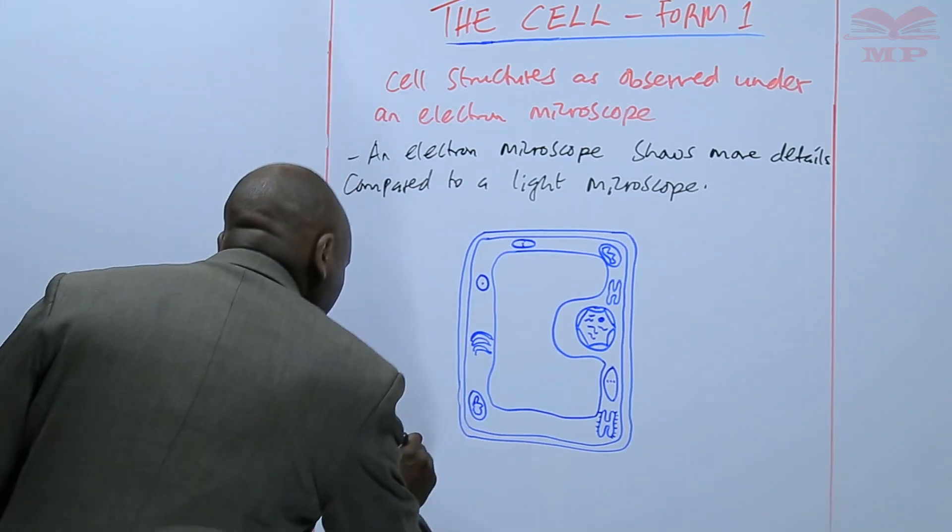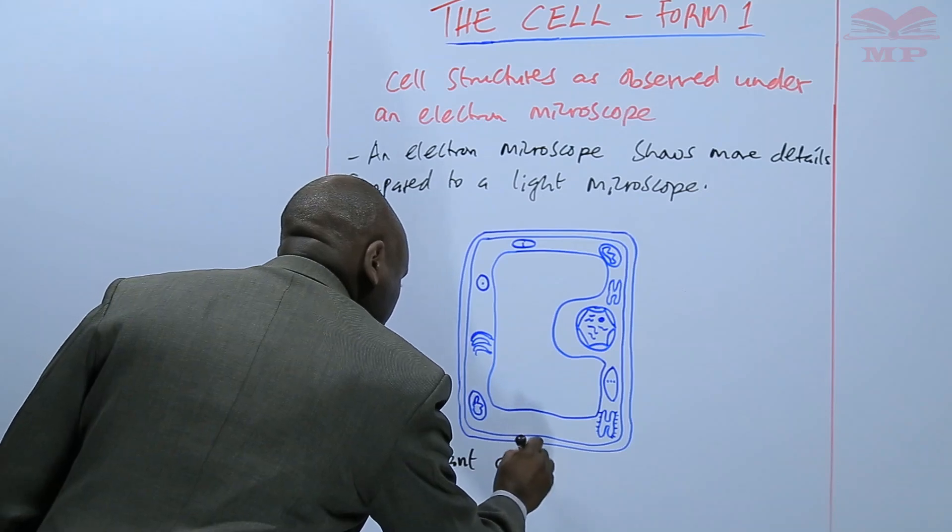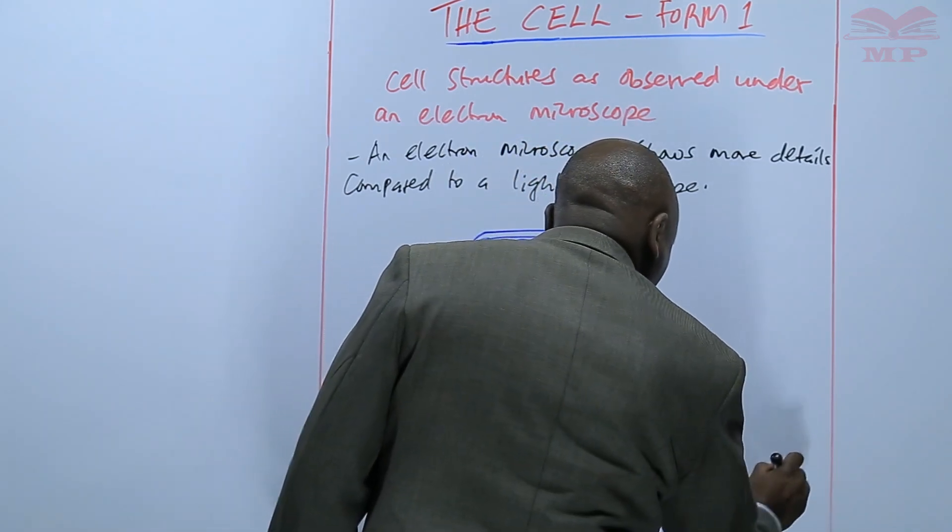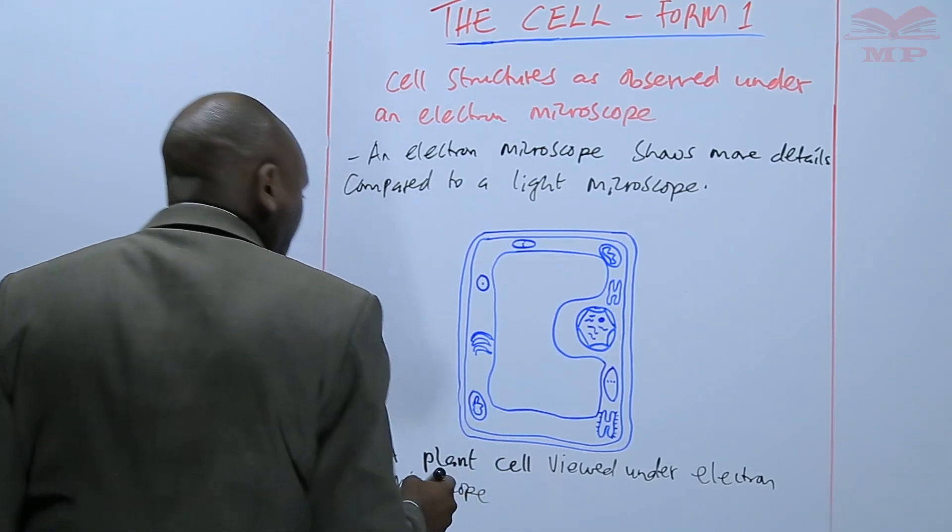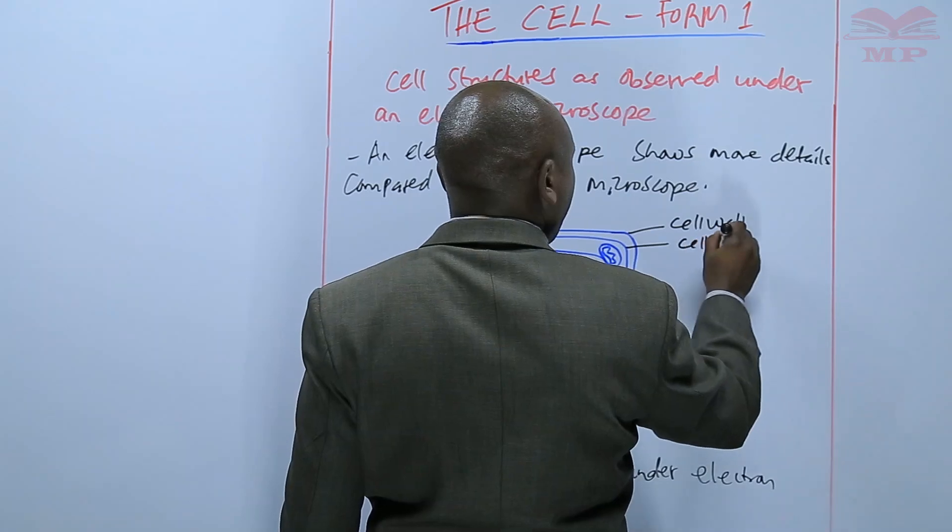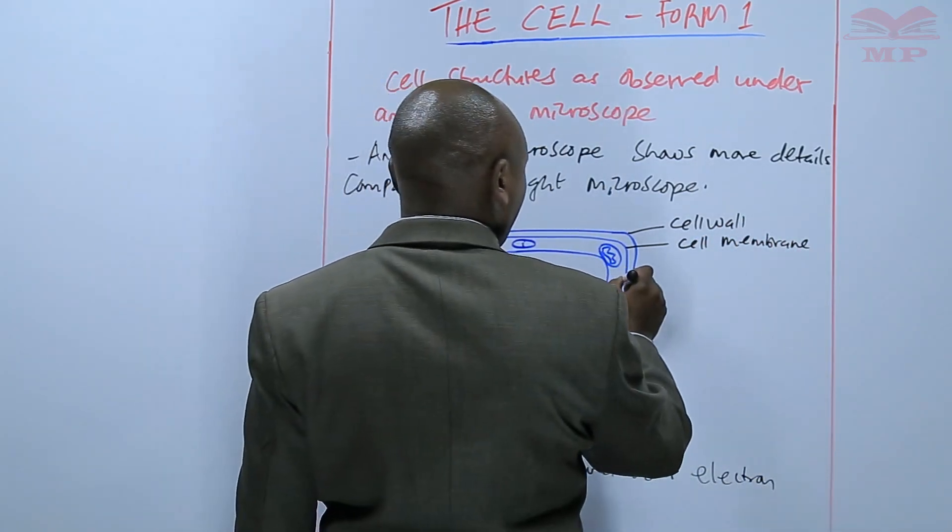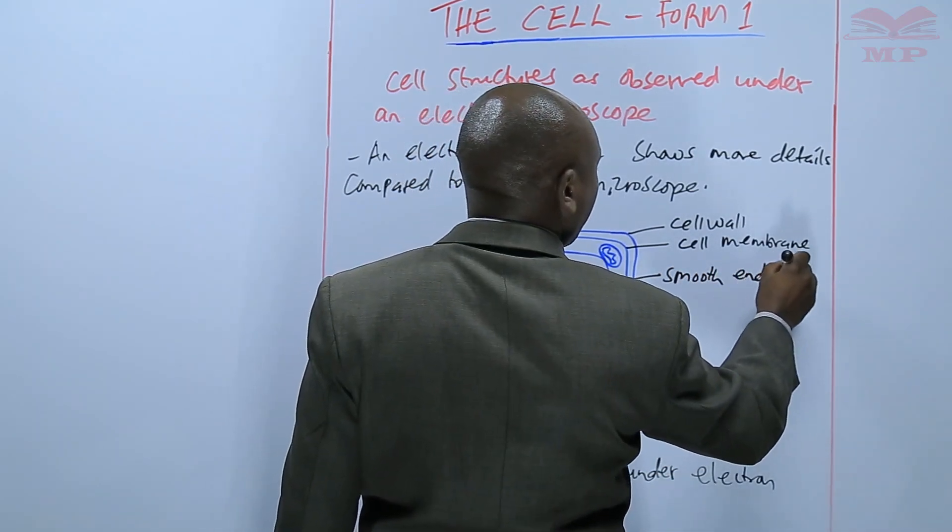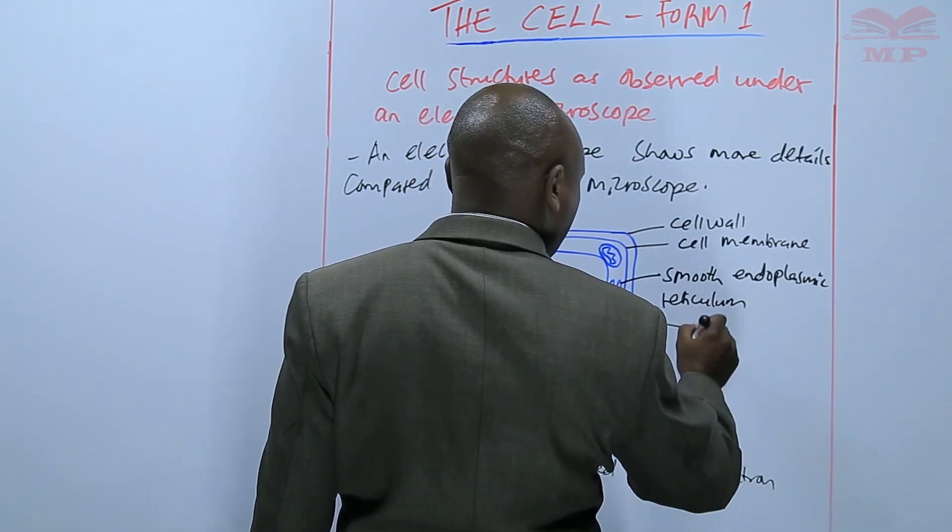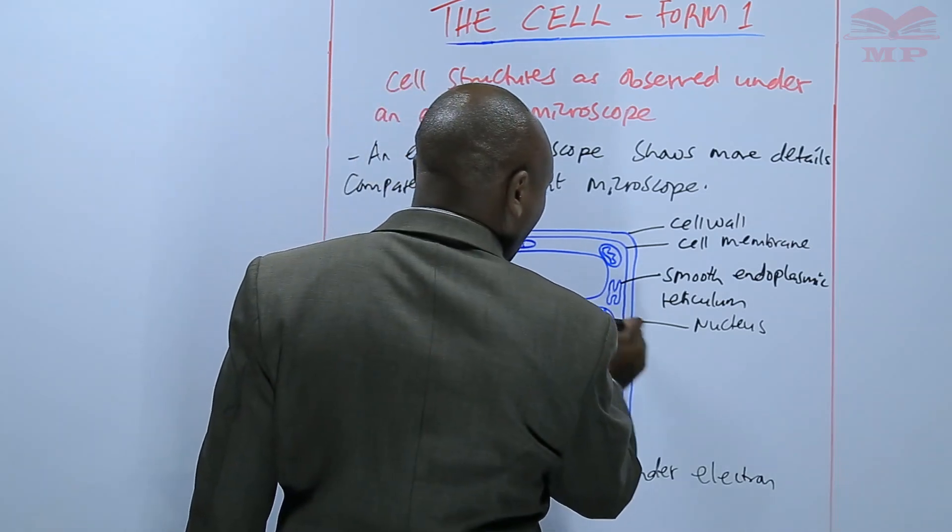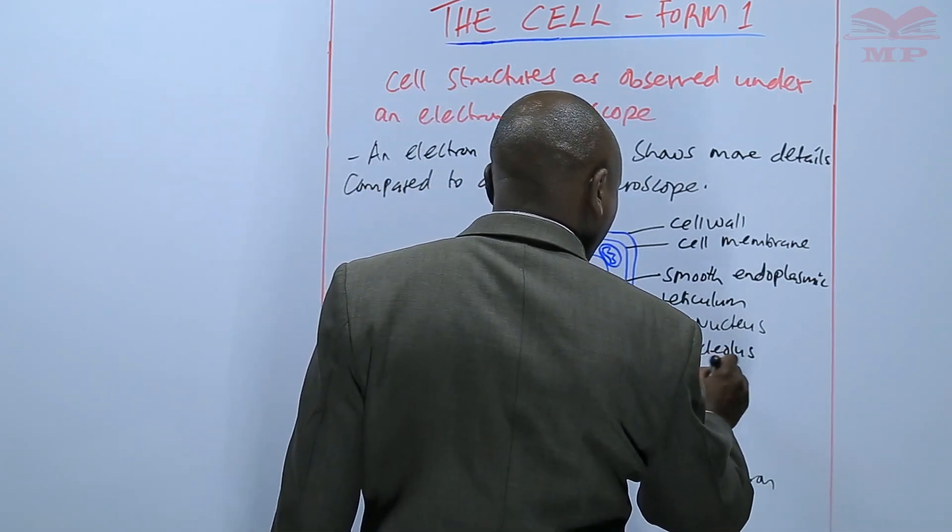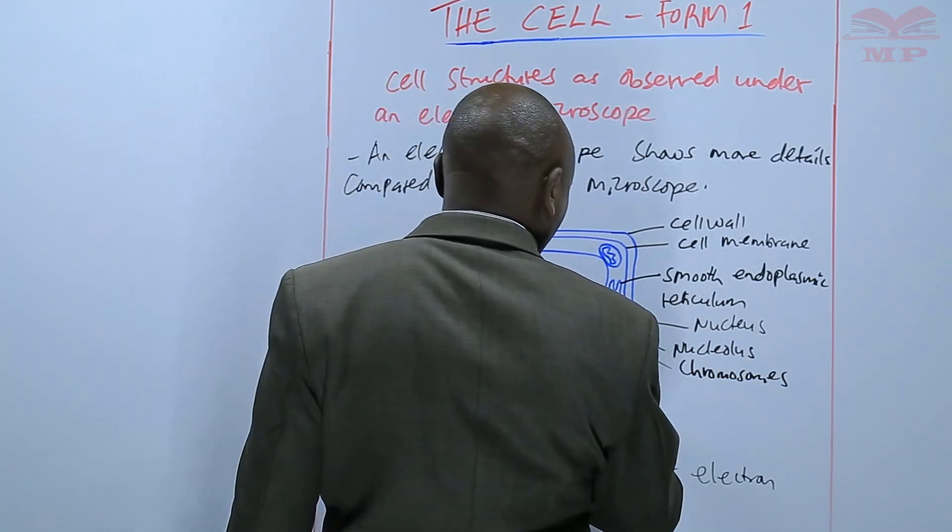So this is a plant cell viewed under electron microscope. As you see, it reveals more details. There is a cell wall, cell membrane, smooth endoplasmic reticulum. We have the nucleus showing the nucleolus and the chromosomes. We have the chloroplast.